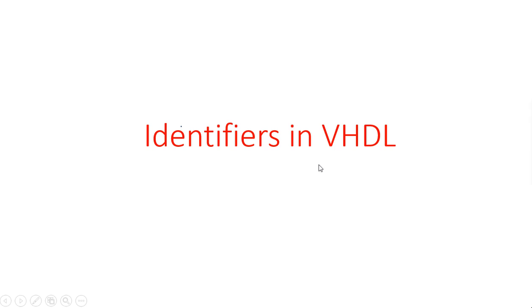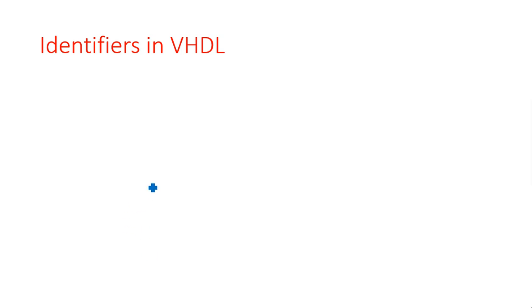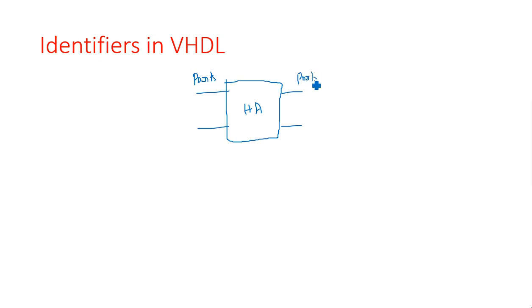In this video I am going to explain about identifiers in VHDL. Like C or Java, VHDL programming also has identifiers to identify a variable, an input port, or an output port. For example, a half adder has two inputs and two outputs — those are called ports. The ports are named with identifiers, such as A, B, S, and Carry.